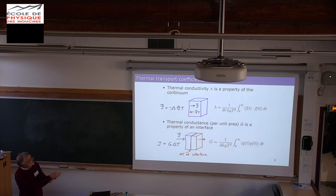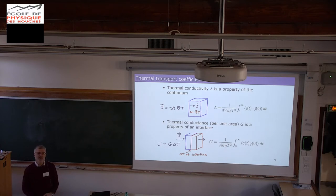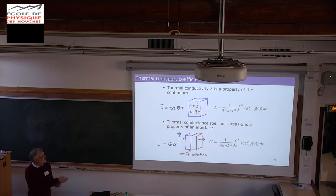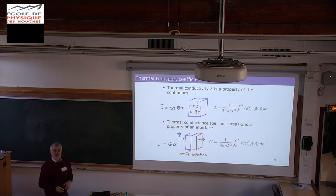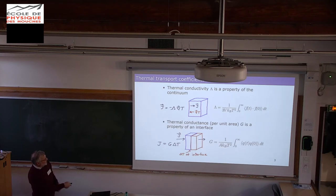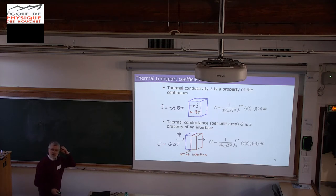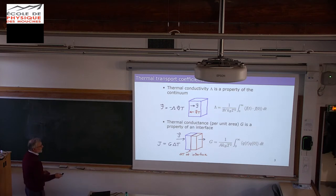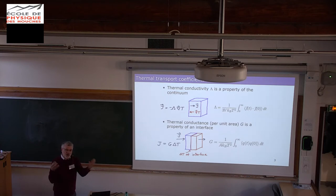The thermal transport coefficients I'm concerned about are: thermal conductivity, which I'll write as capital lambda — the linear transport coefficient that relates a gradient in temperature to a heat current. We can write it in terms of fluctuations — this is just the fluctuation-dissipation theorem written for heat conduction. The other transport property is capital G, the thermal conductance per unit area of an interface — a linear transport coefficient that relates a temperature drop across the interface to the heat current propagating across it. Again, we can write it in terms of fluctuations since we're near equilibrium — it's a linear response.